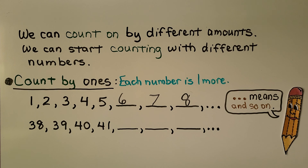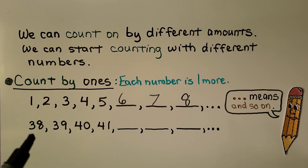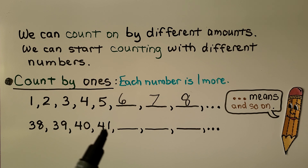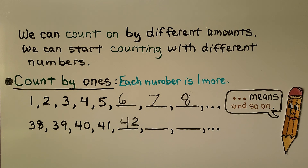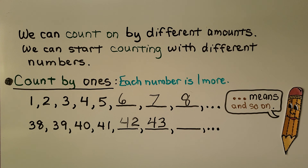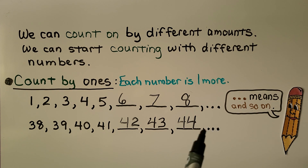We can start counting with different numbers. Here we started with 1, but we can start at 38 and have each number be 1 more: 38, 39, 40, 41, 42. 1 more than 42 is 43, and 1 more than 43 — if you said 44, you're right. These 3 little dots mean 'and so on,' so we could keep counting 1 more.